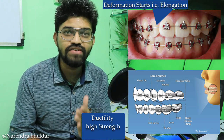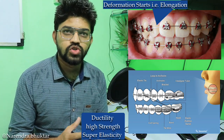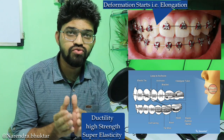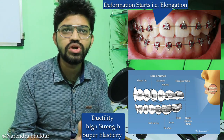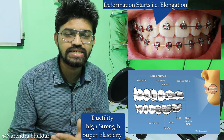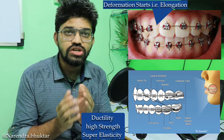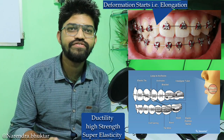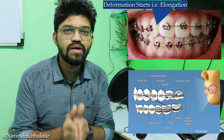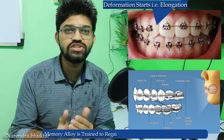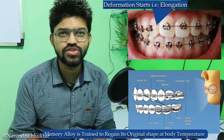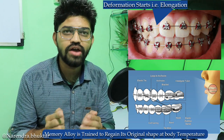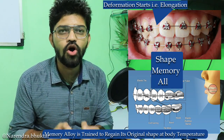These braces undergo slight deformation — they elongate. They have the property of ductility as well as higher strength and super elasticity. After the removal of the force, the braces regain their original shape. That is the property of elasticity — they regain the original shape because of the memory alloy used in manufacturing. This memory alloy is trained to regain its original shape at body temperature.